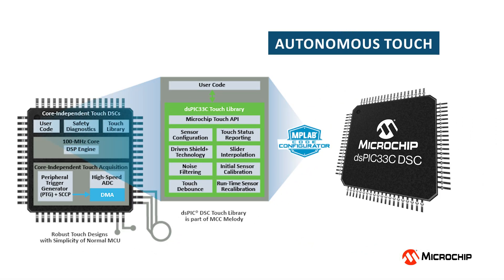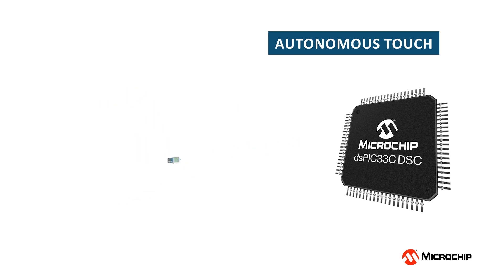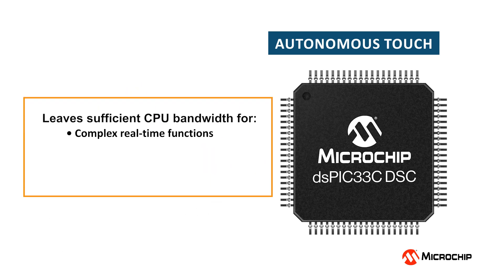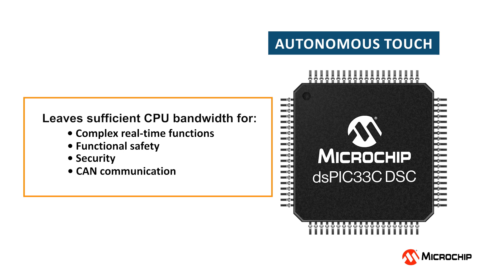To utilize the power of the DSPIC DSCs fully, it's needed to realize your touch acquisition without requiring the core, so your DSC CPU shall be available for computing intense and time-critical applications. The DSPIC 33C DSCs achieve core-independent touch by utilizing the Peripheral Trigger Generator, or PTG. The autonomous touch operation works in a core-independent manner and leaves sufficient CPU bandwidth for other complex real-time functions, functional safety, security, canned communication, and additional housekeeping functions.